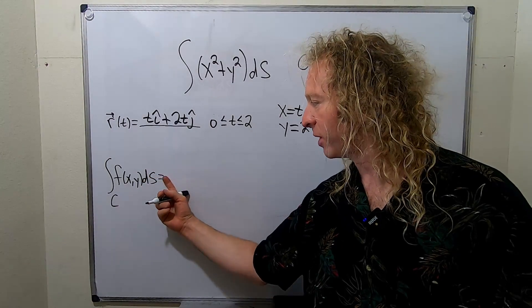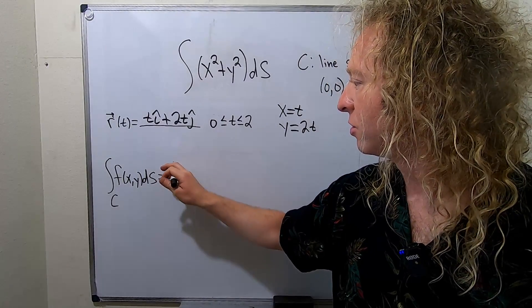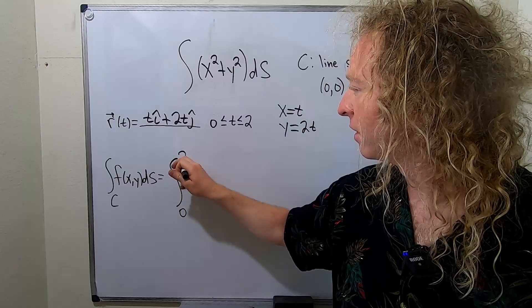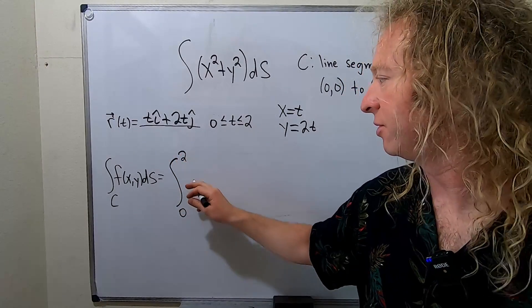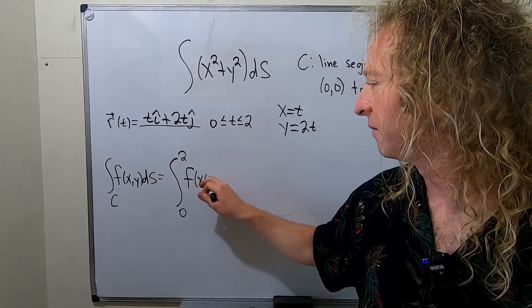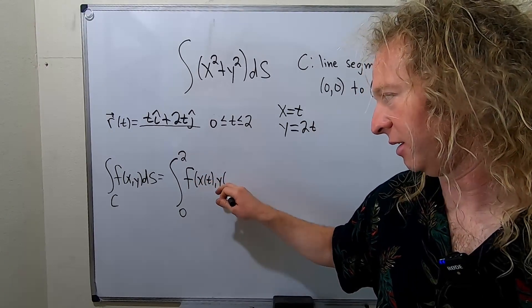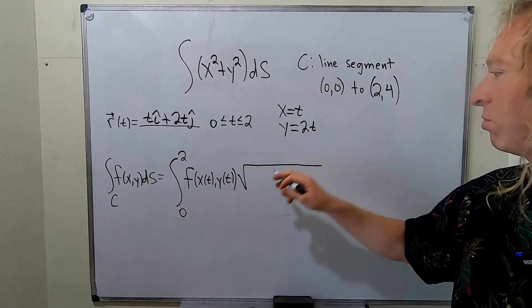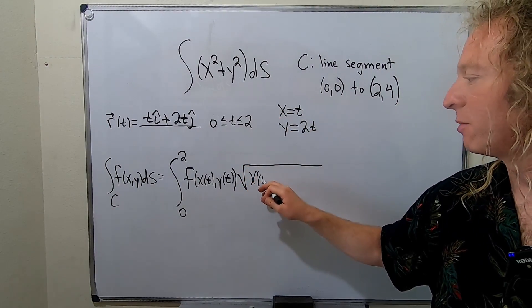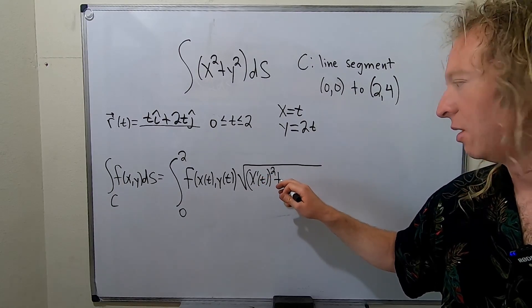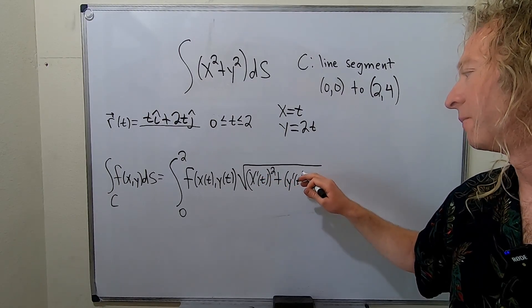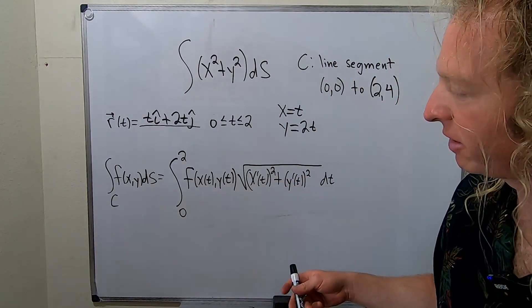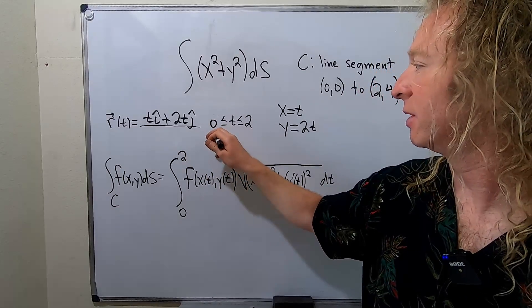Now we just have to figure this out. Let's go ahead and use the formula. We're going from 0 to 2, and the formula is f of x of t, y of t, and then we have the square root of x prime of t squared plus y prime of t squared. When you're first learning this it's good to have the formula.